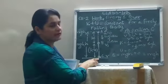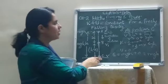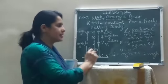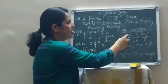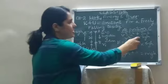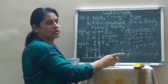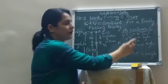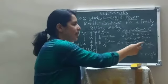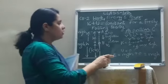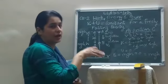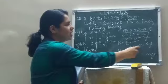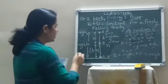Now the body has reached ground level at point C. Using the equation of motion: V² = 0 + 2gH, so V² = 2gH. Kinetic energy at C is half mV² = half m·2gH = mgH. Since the body is at ground level, height above the ground is 0, so potential energy is 0. Total energy at C is mgH + 0 = mgH.